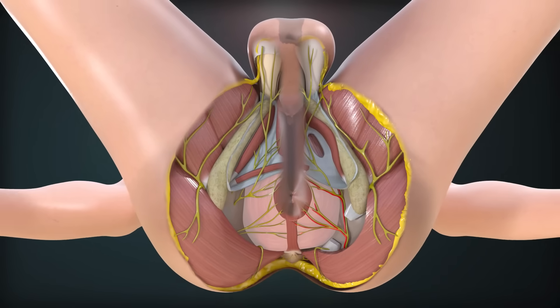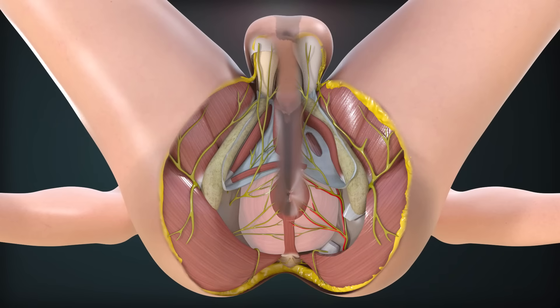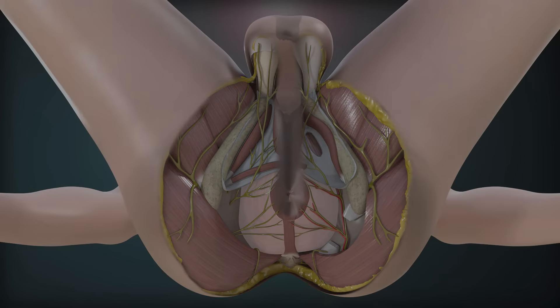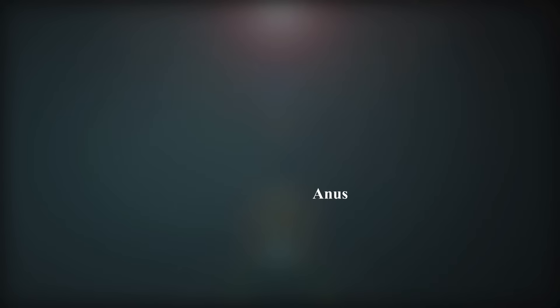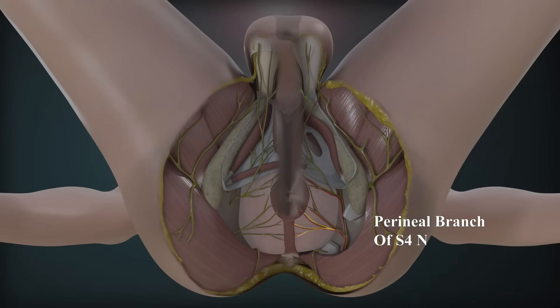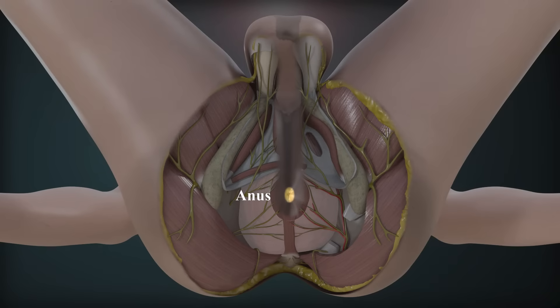Cutaneous innervation: The cutaneous innervation of the anal region is provided by the following nerves. The inferior rectal nerve supplies the skin around the anus and over the ischiorectal fossae. The perineal branch of S4 nerve supplies the skin posterior to the anus.